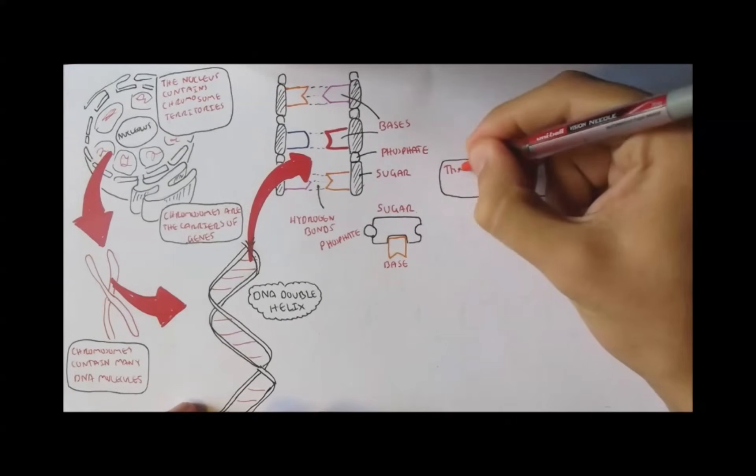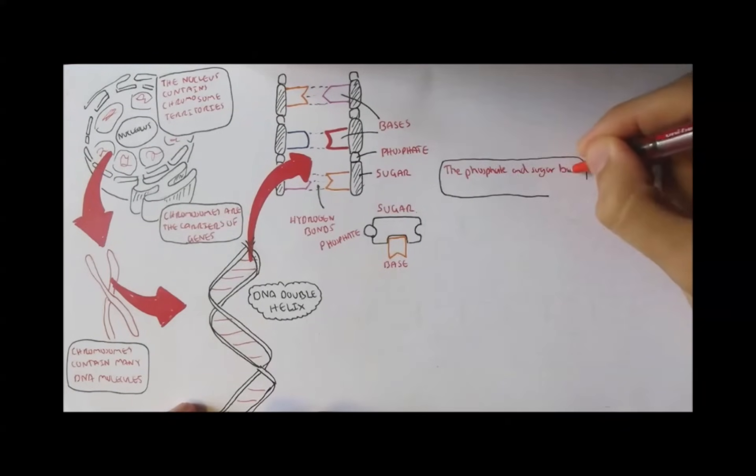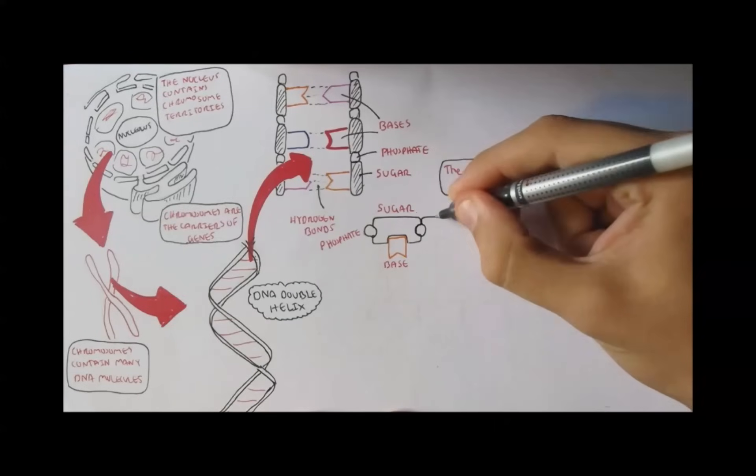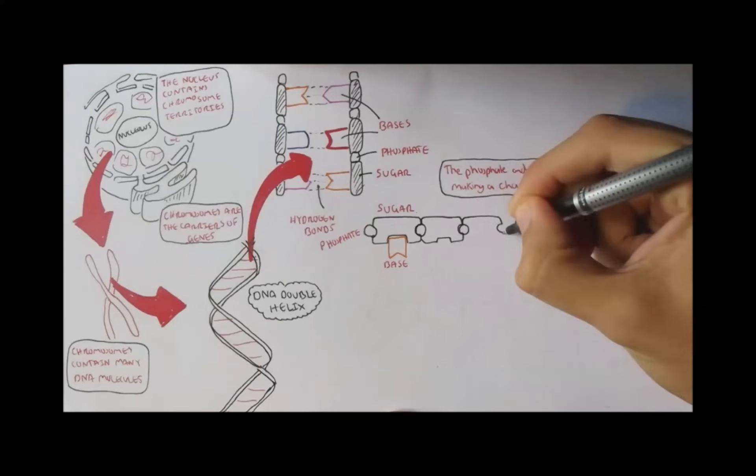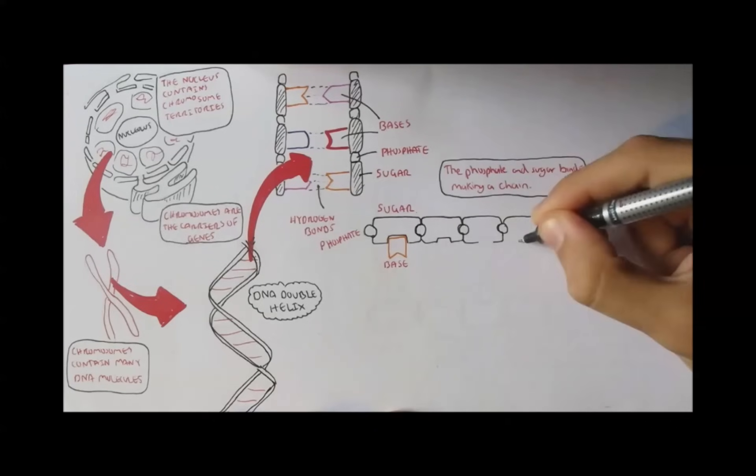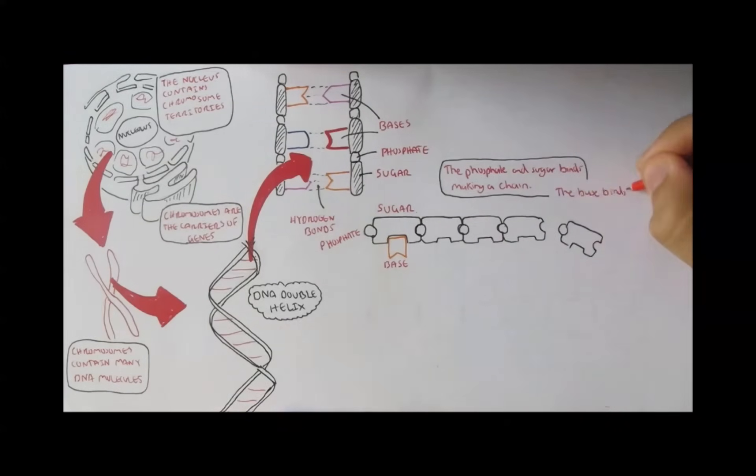Now the phosphate and the sugar bonds make a continuous chain. And so here we have another sugar and phosphate, which binds to the first sugar and phosphate of the first nucleotide. And another sugar and phosphate, and so on. And as mentioned, the bases bind to the sugar components of this molecule. So here are the bases. So this is a single-stranded DNA.